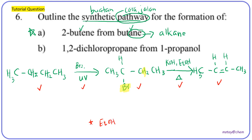EtOH is short form for ethanol. To summarize, there are two methods to produce alkene: from alcohol (dehydration using concentrated H₂SO₄ and heat) and from haloalkane (dehydrohalogenation using alcoholic KOH and heat). Different starting materials require different reagents to produce alkene. In the next video we will learn about all the possible products and which are major and minor products. Thank you for staying — see you in the next video.